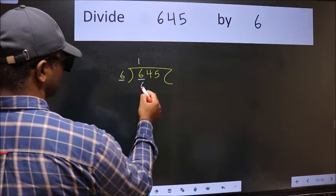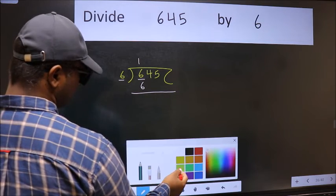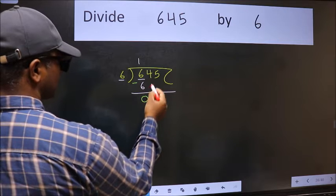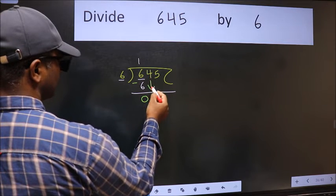Six ones is six. Now we should subtract. We get zero. After this, bring down the beside number, so four down.